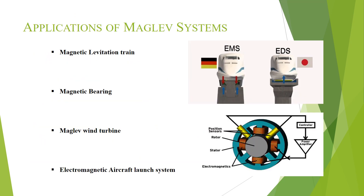These are some important applications of the maglev system. The first one is the magnetic levitation train. In Japan and Germany, maglev trains are one of the most important modes of transportation. The required lifting and propulsion force are provided by the electromagnets lined on the railway tracks over the entire course of the journey. The second one is the magnetic bearing, where an electromagnetic rotor is levitated in the air with the help of stator-mounted electromagnets. Since the system is free from mechanical friction, the overall efficiency is greatly increased.